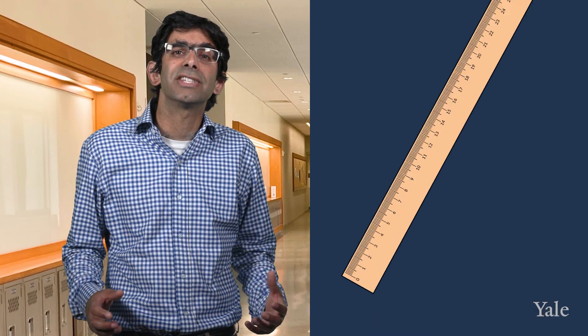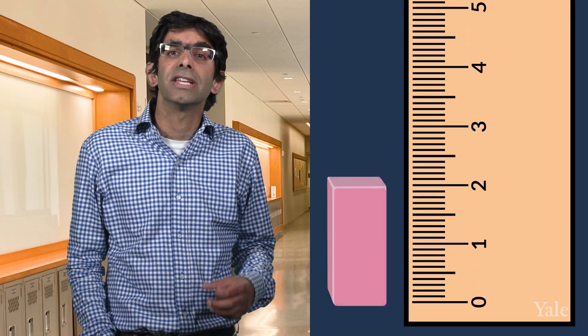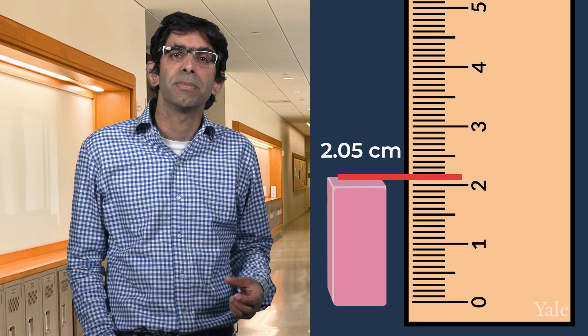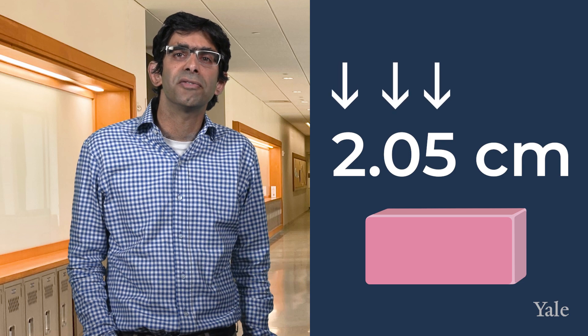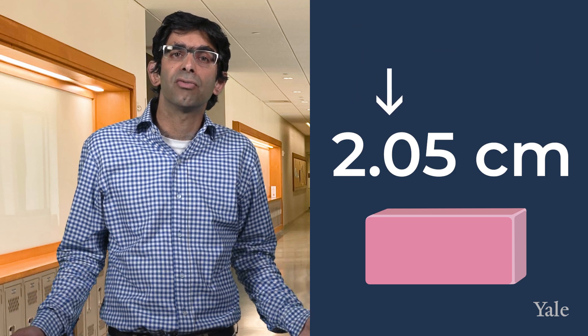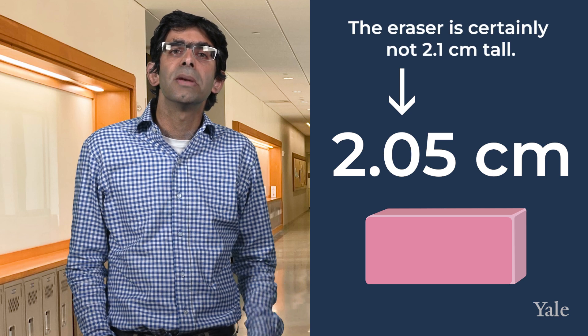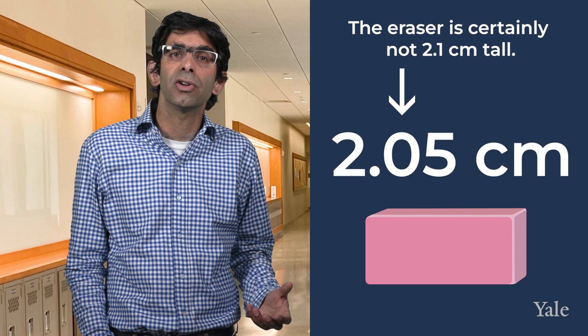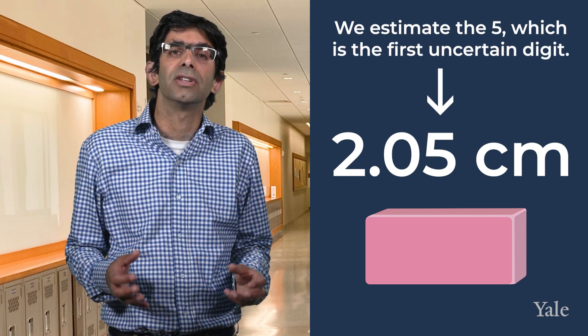For instance, imagine that you have a ruler that has tick marks for every millimetre. You measure that your eraser is 2.05 centimetres tall. 2.05 then has three significant figures because you're certain that the eraser is more than 2 centimetres tall. You're certain that the eraser is not 2.1 centimetres tall, meaning that you are certain about the zero, and then you estimate the 5, which is your first uncertain digit.